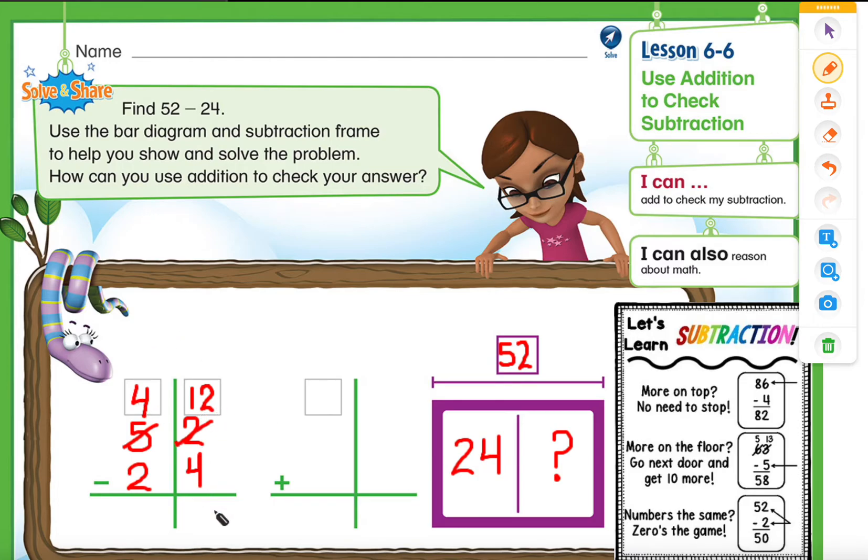So 12 minus 4 gives us 8. 4 minus 2 gives us 2. Alright, so we found our difference.